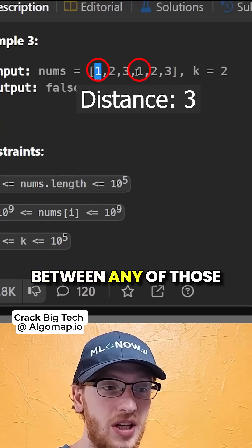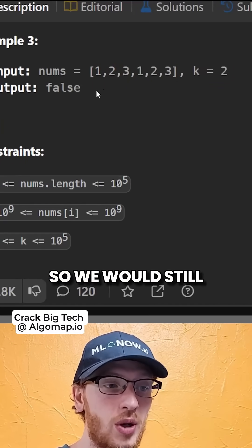For this example, the distance between any of those duplicates is always bigger than 2, so we would still return false.